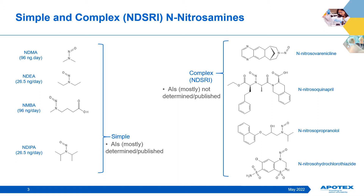We are now well acquainted with what we term the simple nitrosamines, and I have four examples shown here on the left. These simple nitrosamines have acceptable intake values provided in the FDA guidance on nitrosamines in pharmaceutical products. On the other hand, the finding of complex nitrosamines related to APIs — dubbed NDSRIs, or Nitrosamine Drug Substance Related Impurities — has greatly increased since July 2021, when the U.S. public was first made aware of nitrosovarenicline. This and the other three examples shown here have all been the source of recalls since then. Almost all of these complex nitrosamines do not have published acceptable intakes, mainly because until now the species had not been identified, and so none had been subjected to animal carcinogenicity studies.